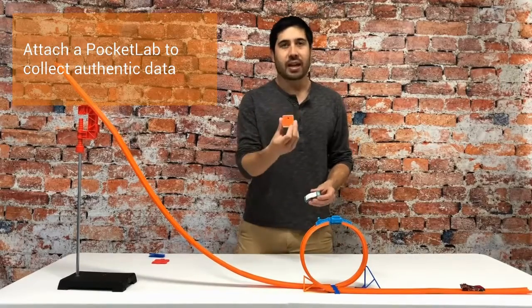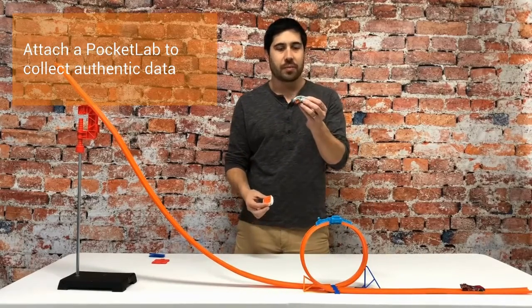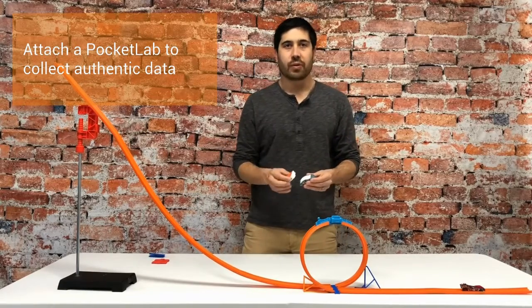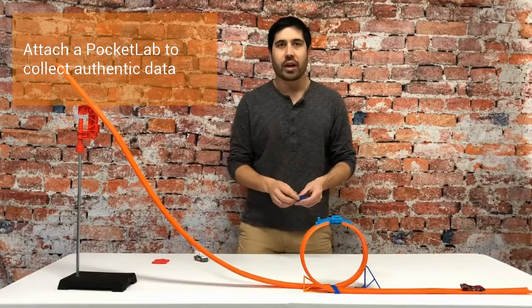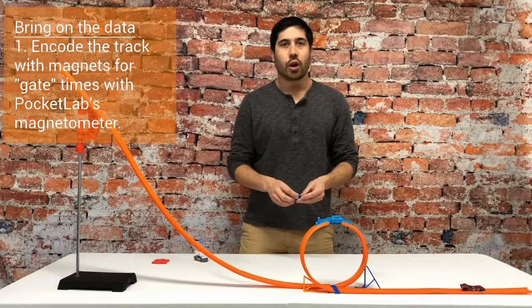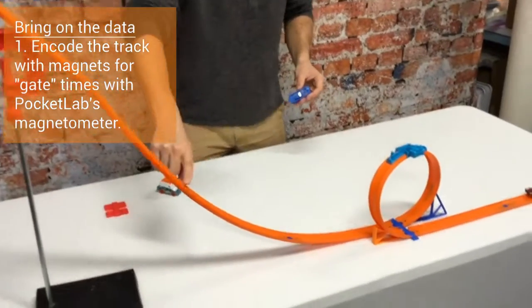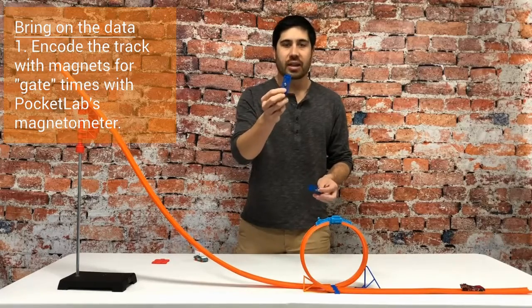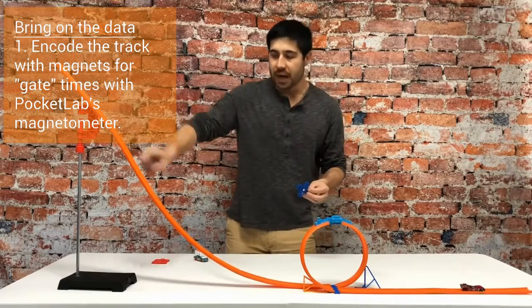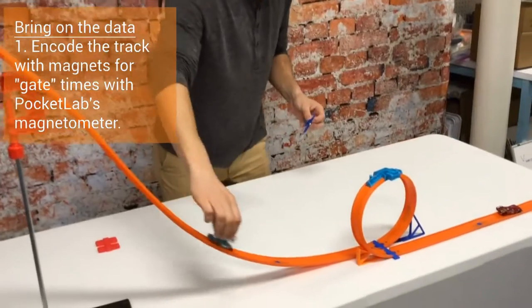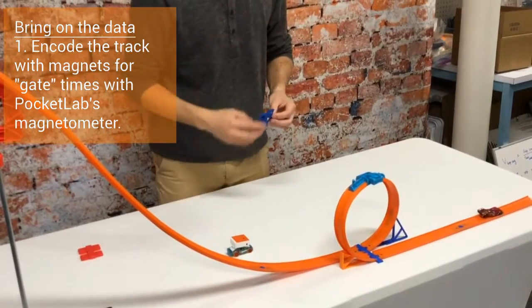Place a PocketLab on top of a Hot Wheels car, and now we can collect data all along the track in a number of different ways. The first way that we've come up with is to encode the track with magnets. Under each of these sections, we have magnets on the backside of the connectors. When the PocketLab and Hot Wheels car passes over these sections, we can see a change in the magnetic field.